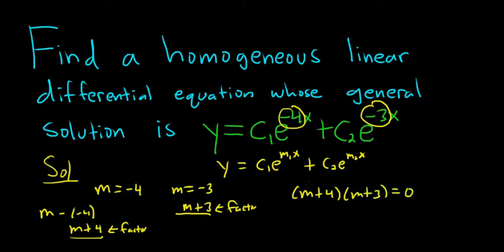You can multiply this out. m times m is m squared. And then the middle is 4m. The outside is 3m. So when you add them, you get 7m. And then 4 times 3 is 12. So this is the characteristic equation.